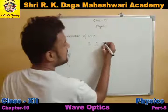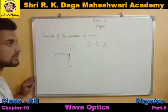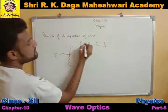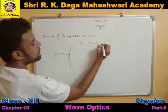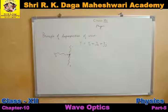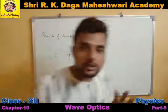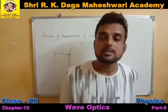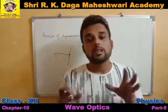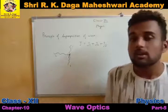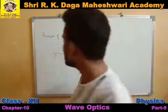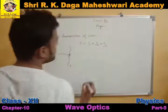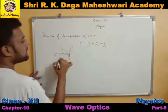The displacement due to the second wave is y2, and the displacement due to the third wave is y3. So the total displacement is equal to the sum of all three displacements caused by all three waves. Similarly, we can say that the total displacement of a particle is equal to the sum of individual displacements caused by the waves incident on that particle.